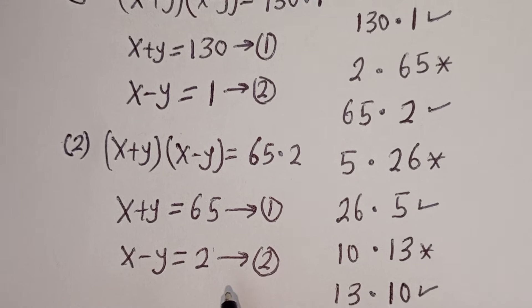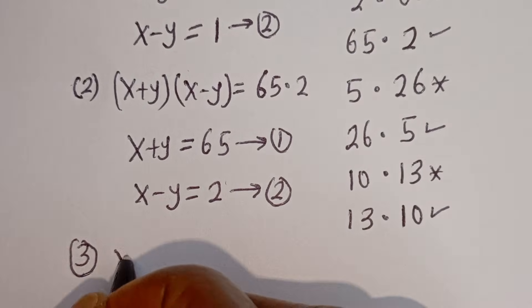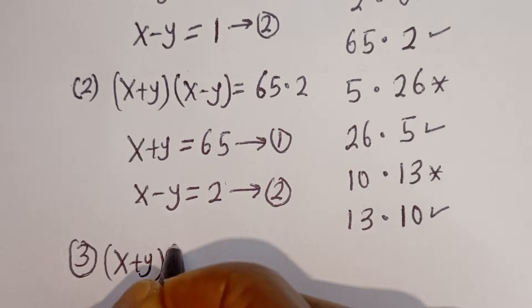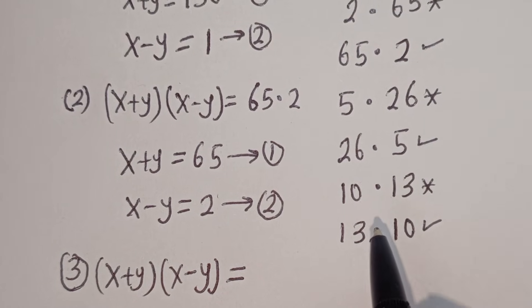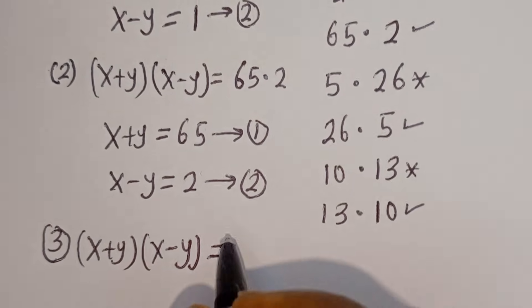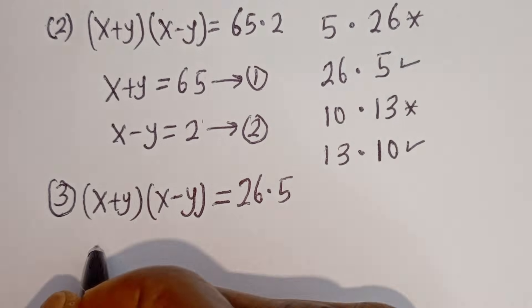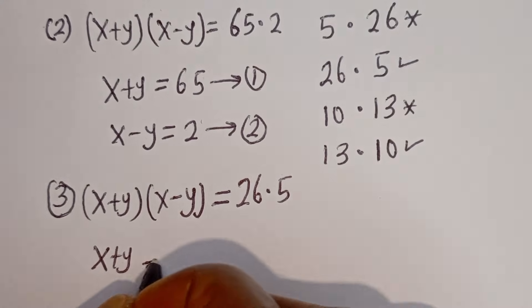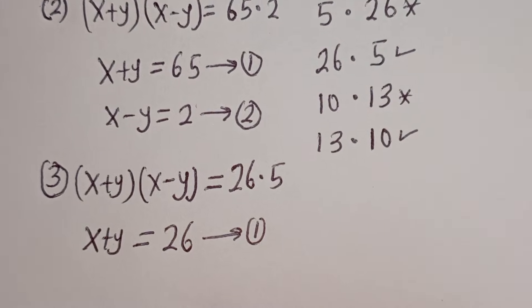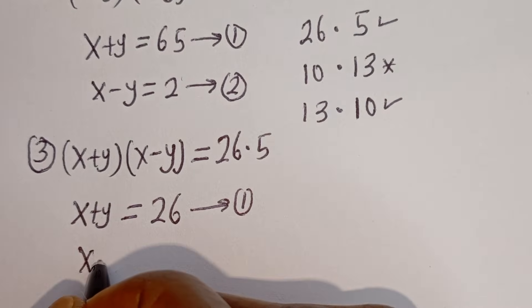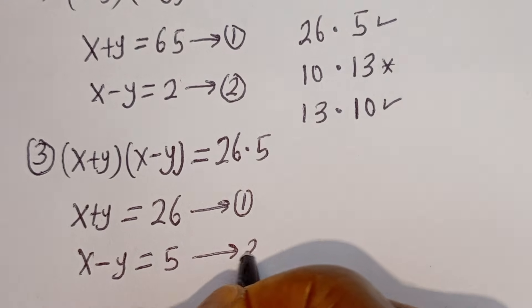For the third case, (X + Y)(X − Y) = 26 × 5. The equations are: equation 1: X + Y = 26, and equation 2: X − Y = 5.